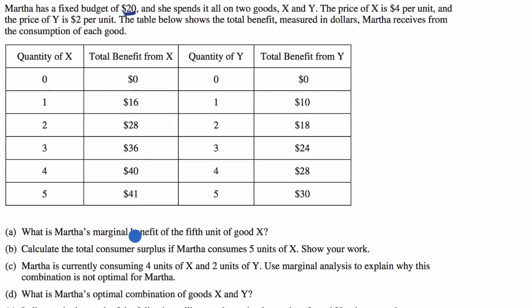What is Martha's marginal benefit of the fifth unit of good X? She has a total benefit of $40 when she has four of X, and when she goes to the fifth, her total benefit is an incremental $1. She goes from $40 to $41. The marginal benefit of that fifth one is that extra dollar. We added a dollar of total benefit, so the marginal benefit is $1.